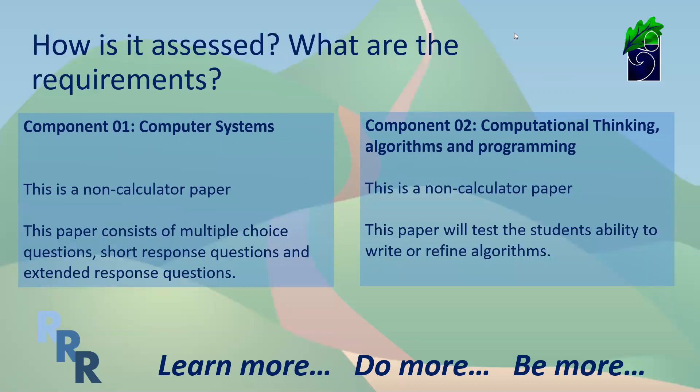How is the course assessed? Pupils will be externally assessed through two written papers. Each component I spoke about previously is assessed in an exam. Both are non-calculator written papers — and I always have to emphasise the fact that those are written papers in computer science. In component one, pupils will answer a range of multiple choice questions, short response questions and extended response questions.